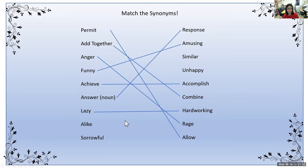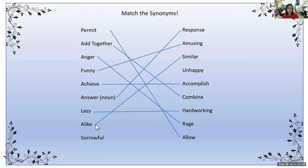What about the word alike — is it a synonym for similar or unhappy? If you said that alike is a synonym for similar, you are correct — they both have similar meanings. And our last one is sorrowful — the synonym for sorrowful is unhappy. They both have similar meanings.